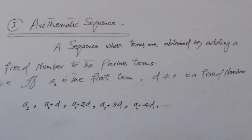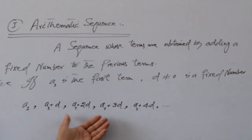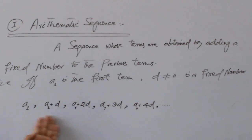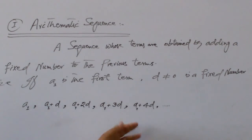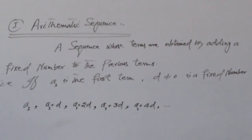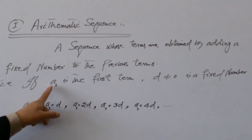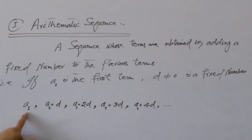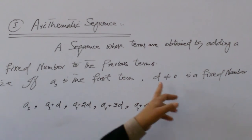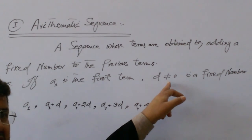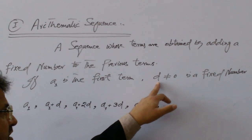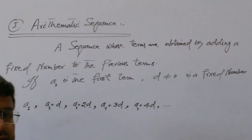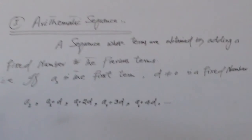According to the definition, the given sequence is an arithmetic sequence. There is no condition on the first term A1, but the condition on the fixed number D is that D is never equal to zero.